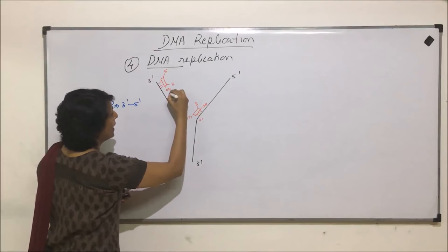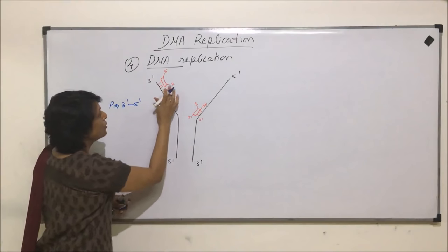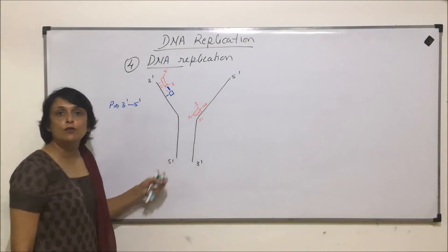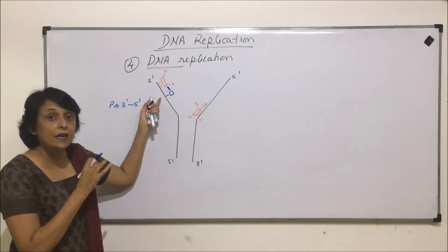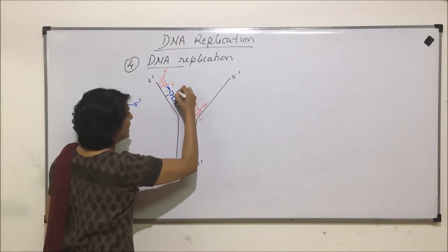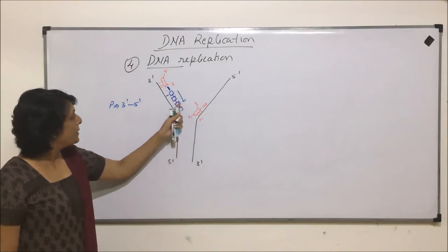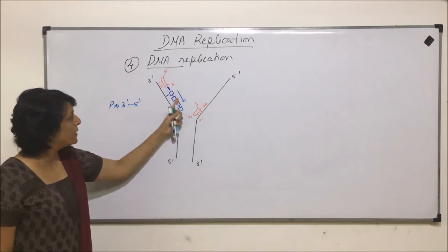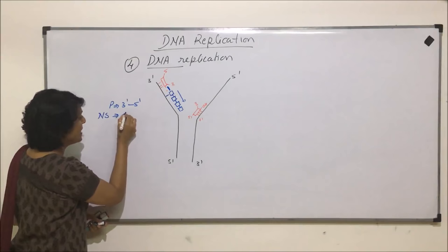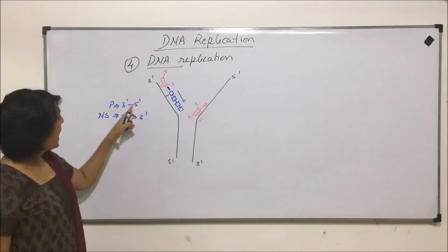For the parent strand three prime to five prime, the primer is in front of the third end. The DNA nucleotide will have its fifth carbon in front, and a phosphodiester bond will be formed. Here also the hydrogen bond with the complementary nitrogen base forms. The next nucleotide comes here, then the next one, and the next one — that means the strand is growing towards the third carbon. The new strand which is formed is starting from five prime and growing towards three prime.